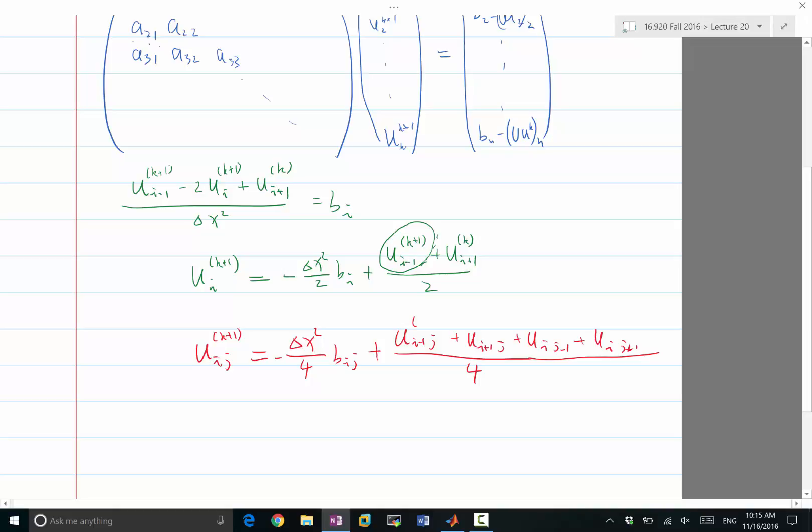Now I need to put superscript on all of these. In Jacobi iteration, I basically put k+1 on everything I already computed and k on everything I have not computed. So if I go from smaller i to bigger i and smaller j to bigger j, what are the terms that I should put as k+1? Yes, all the minus 1s is something I already computed. While this term is something I haven't computed, this is what I have computed, this is something I have not computed. So this would be how we apply the Gauss-Seidel iteration to a 2D Poisson's equation.